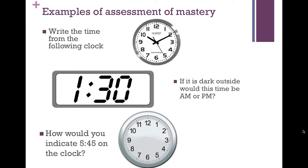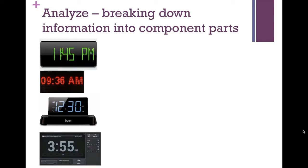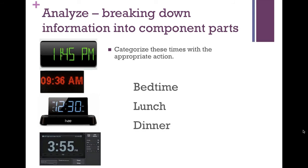Could you push this standard to a higher level? You certainly could. For analysis, where you break down information, you could give students four times in the left column and four events in the right column — like bedtime, lunch, dinner, or wake-up — and ask them to categorize the times with the appropriate action. Students have to consider two sets of data: the actual times and the corresponding actions, then match them. This is complex, higher-level thinking. Even though there's a definitive answer, students must work through the logic — a student might argue three fifty-five is lunch because they eat after school, but then they have to reconsider where dinner fits.